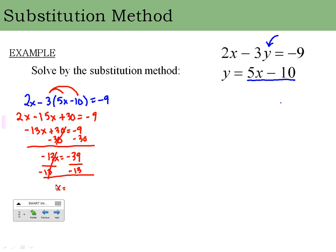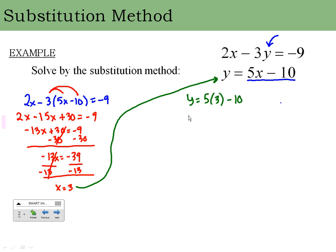I get x equals 3. Now I need to find y. The best place to plug in is where we already solved for y. So y equals 5 times 3 minus 10. Five times 3 is 15, and 15 minus 10 is 5. So the solution is x equals 3, y equals 5 — the point (3, 5).